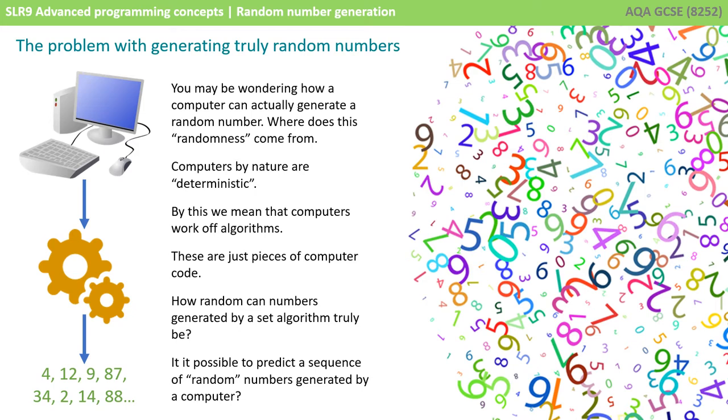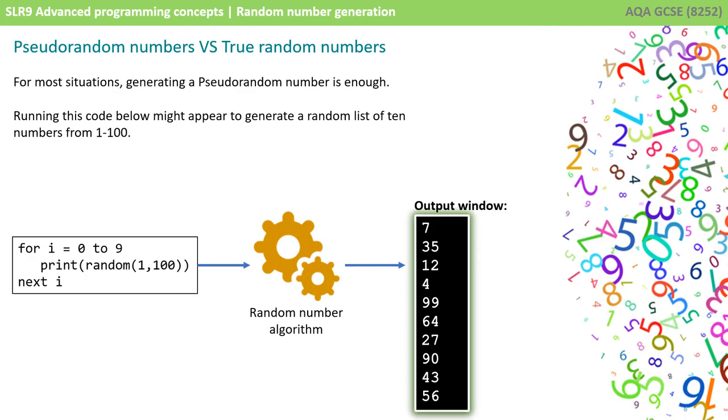So how truly random can a number generated by an algorithm be? Is it somehow possible to predict a sequence of so-called random numbers if they've been generated by a computer?